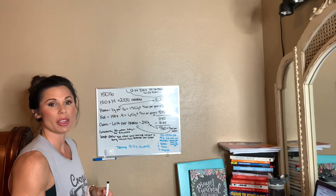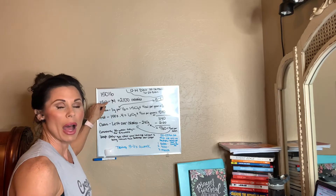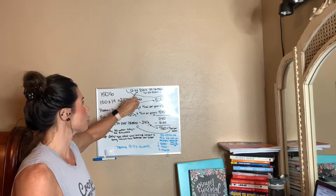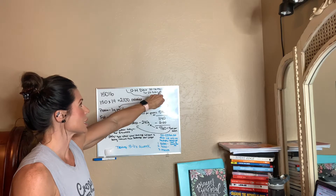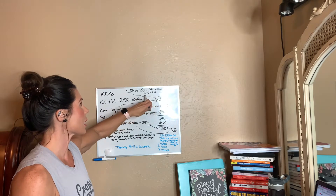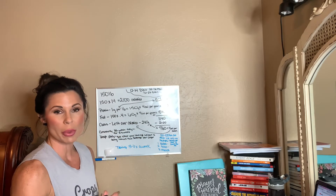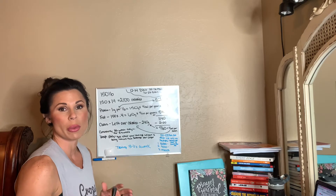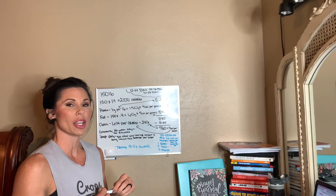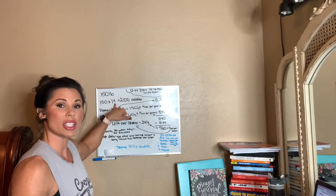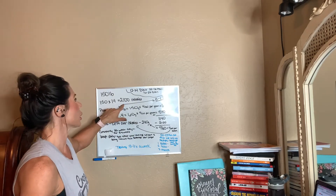For a 150-pound female, we're going to multiply by 14. Twelve to 14 is a good multiplier for a diet phase, 14 to 16 for maintenance, and 16 to 22 for a gaining phase. Those are generic numbers — everybody is different. I like to start a little bit higher because it's better to start higher and go down than start too low. So we're going to start this 150-pound female at 2,100 calories.